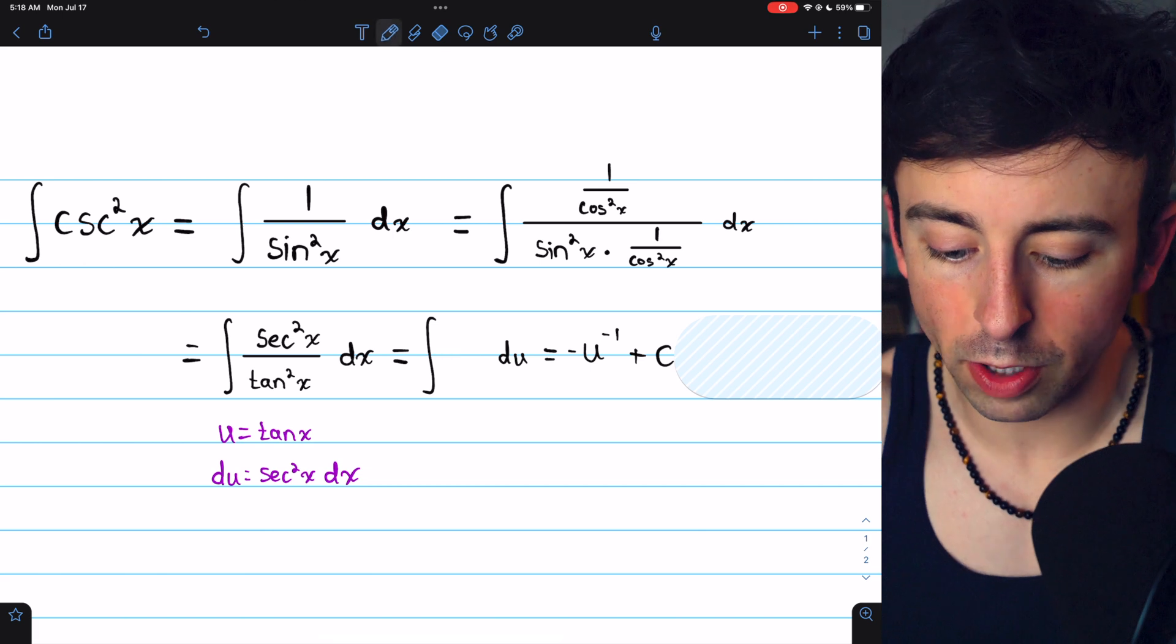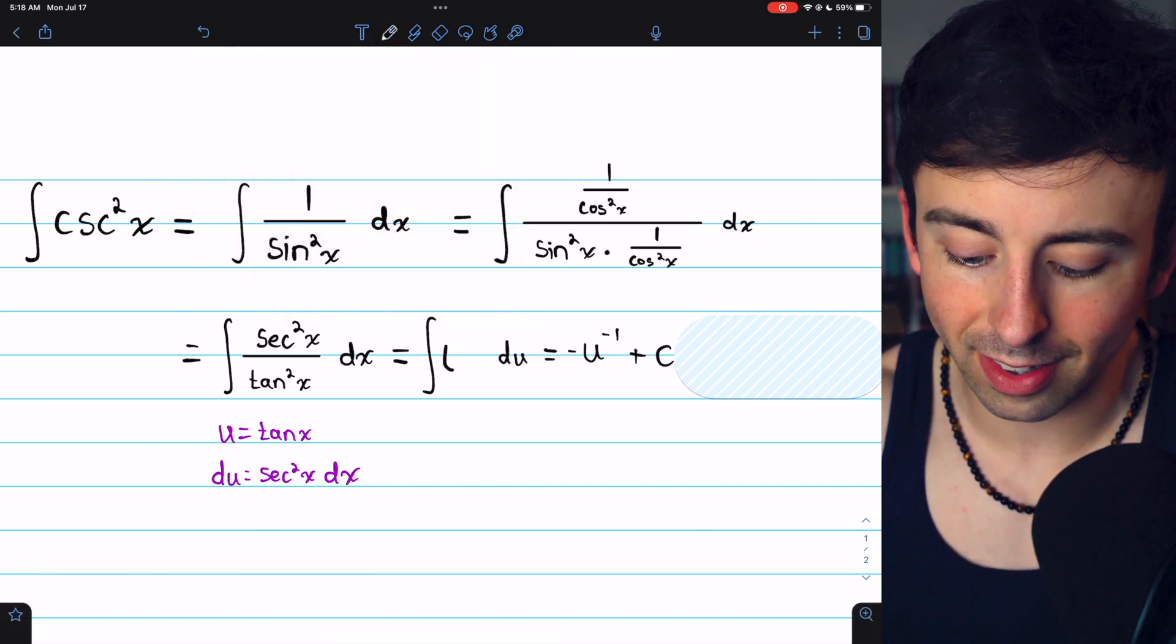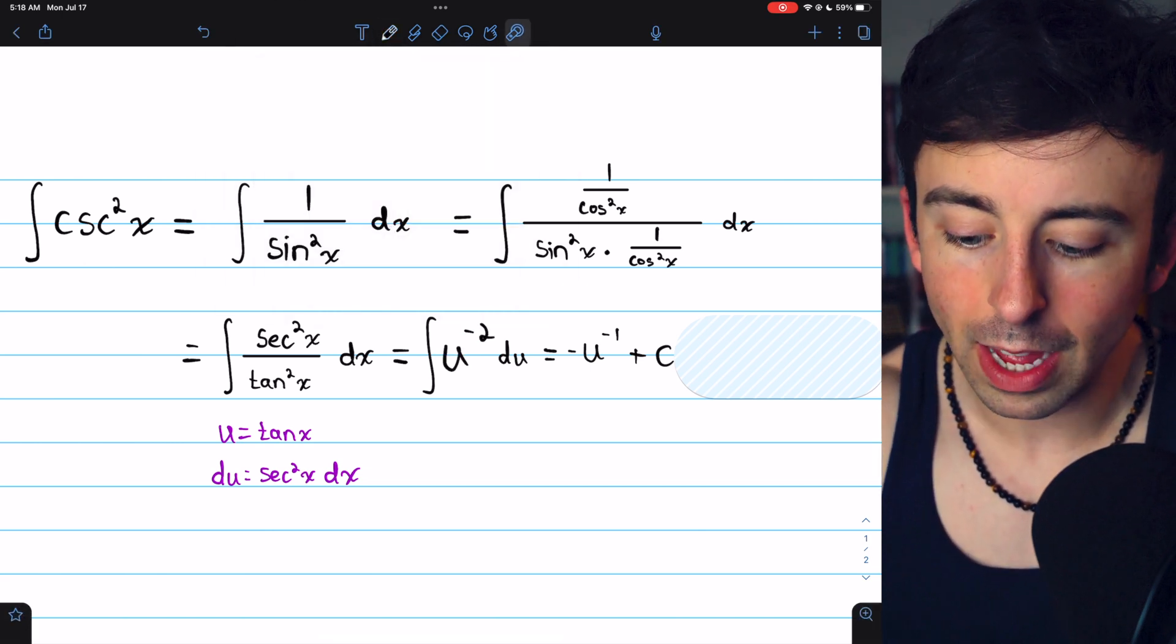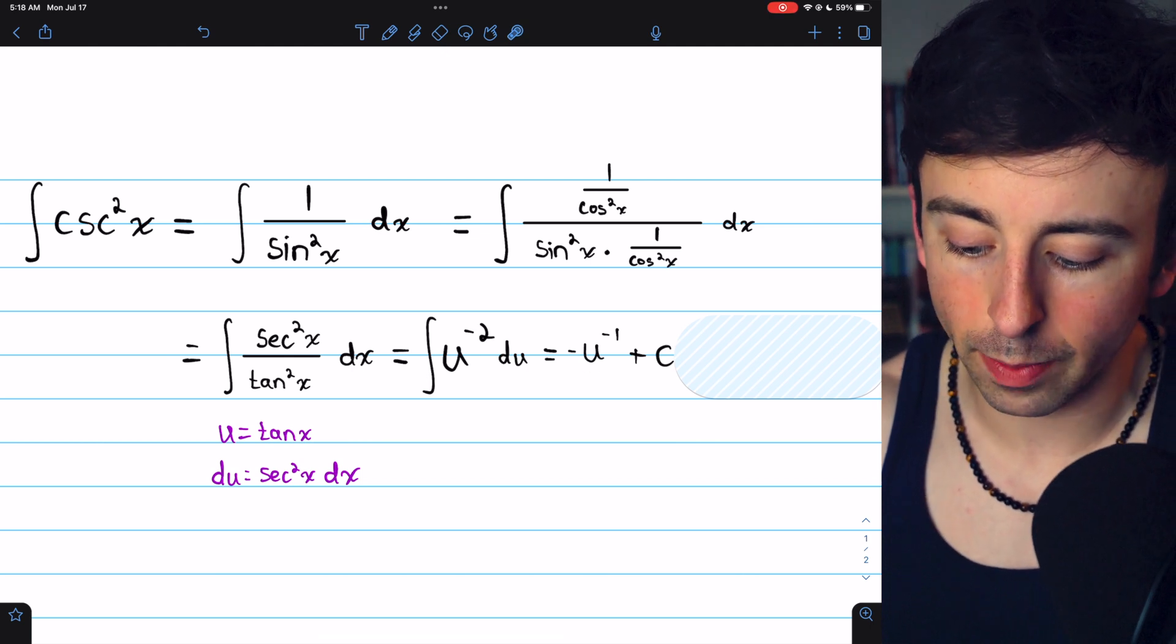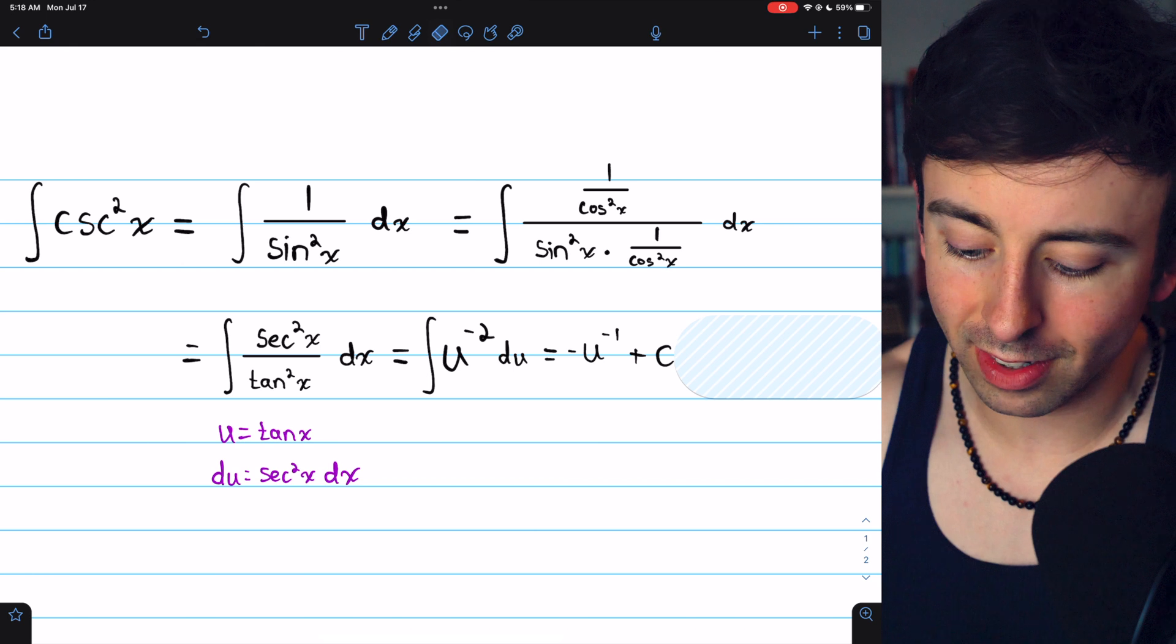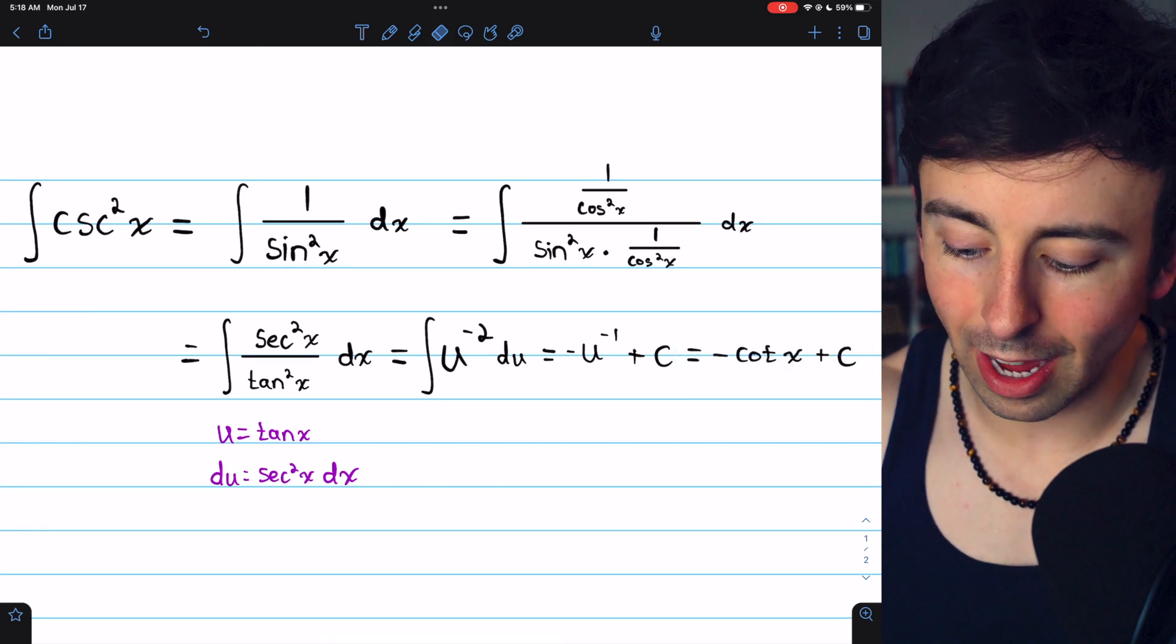1 over u squared, of course, is the same as u to the negative 2. So the integral of that is negative u to the negative 1 plus the arbitrary constant, and u is the same as tangent.